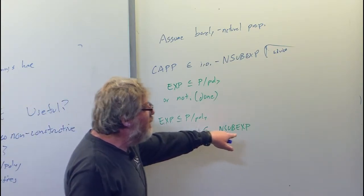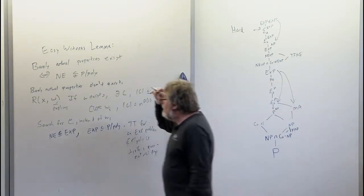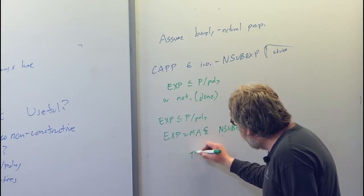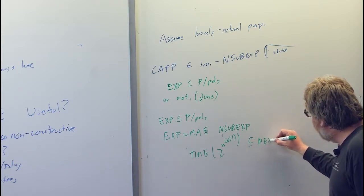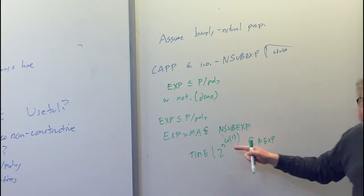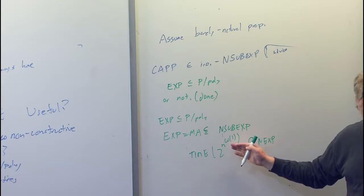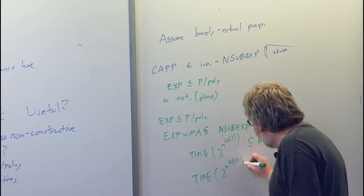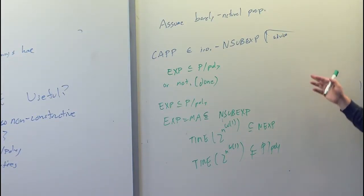Now exp is in non-deterministic sub-exp, which means something strictly stronger than exp is in non-deterministic exp when you scale that up. Specifically, time 2 to the N to the omega(1) for some omega(1) function is contained in non-deterministic exponential time. But by the Cantor diagonal argument, we can directly diagonalize and get something not with large circuits — by the diagonalization argument, this is not in P/poly. So something not in P/poly is contained in non-det-exp, i.e., NE is not in P/poly.